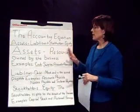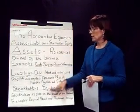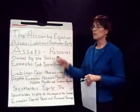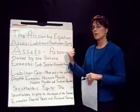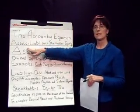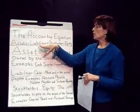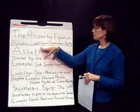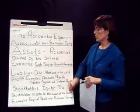Once we have an understanding of those particular account types, the accounting equation begins to make more sense. If we look at our assets, they're either owned by our creditors or by our stockholders.